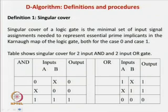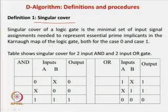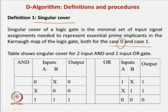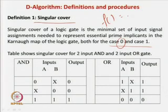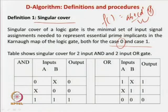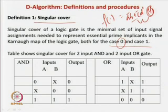The first definition is the singular cover. The singular cover of a logic gate is the minimal set of input signal assignments needed to represent the essential prime implicants in the Karnaugh map of the logic gate, both for output case 0 and 1. A prime implicant is one that is not contained in any other implicant and contains a minterm not present in other implicants of the function.